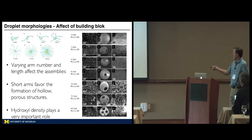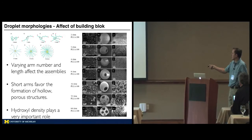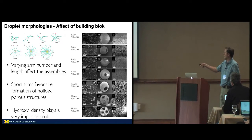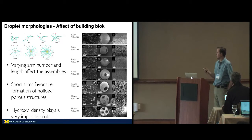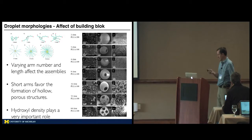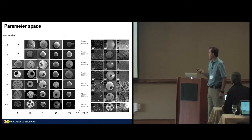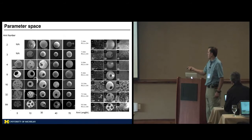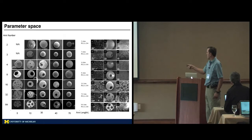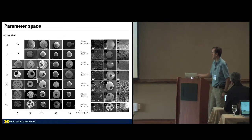At the end of this polymerization reaction, there are some unreacted hydroxyls at the end, and these hydroxyls play a really important role in what the final structures are. As you change the length of the arm and the number of arms in the polymer, you can get a wealth of different structures.